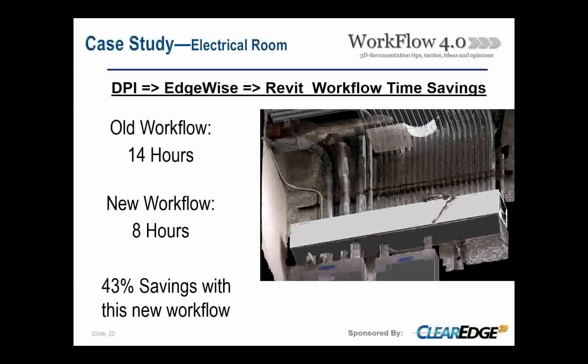Comparing to the tripod scanner, we ended up saving quite a bit of time because the registration process with the DPI scanner is much faster. With big tripod scanners, you have to register and stitch the whole point cloud into one large file, which is very time-consuming. The nice thing about the DPI scanner is that it stitches as you scan — appended scans are already stitched where they need to be. All said and done, we saved quite a bit of time even over the big tripod scanners.